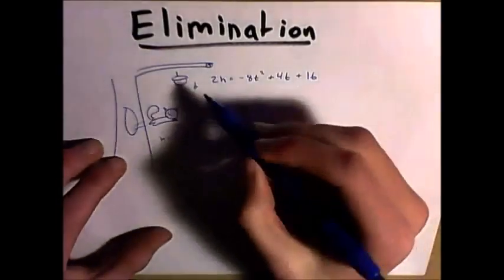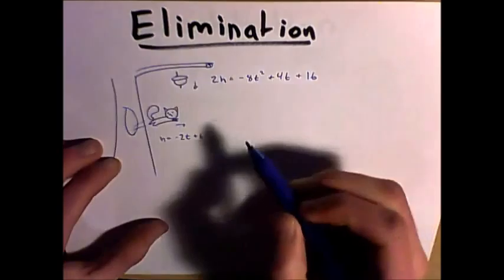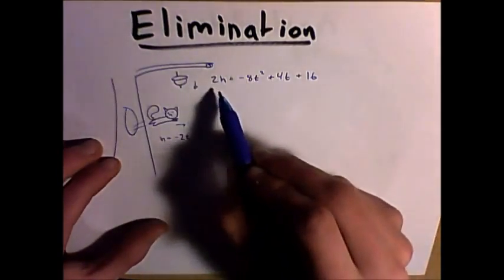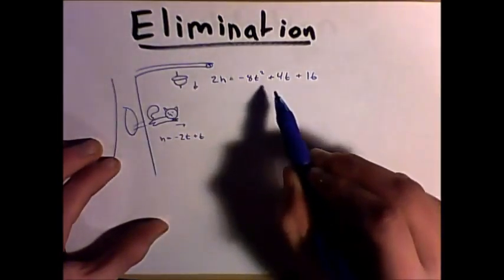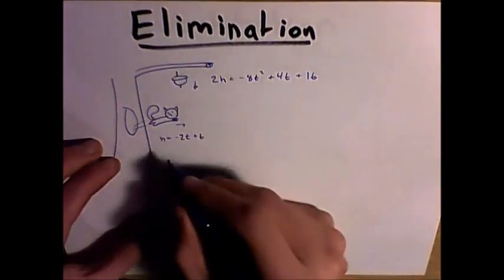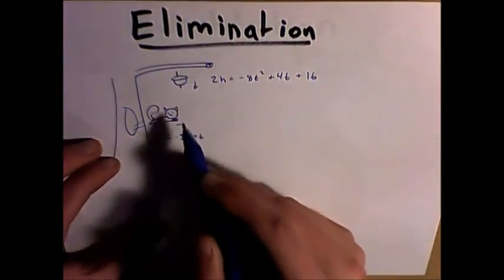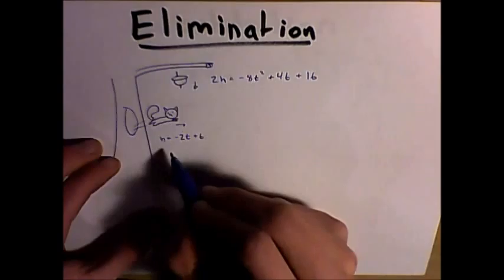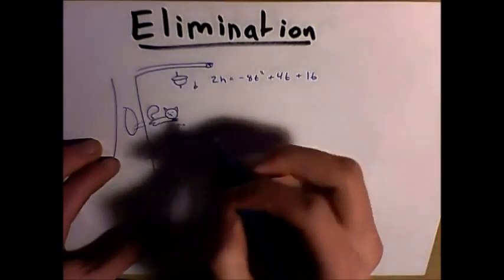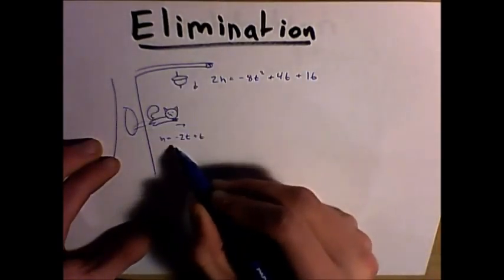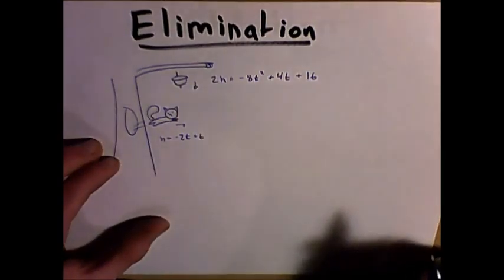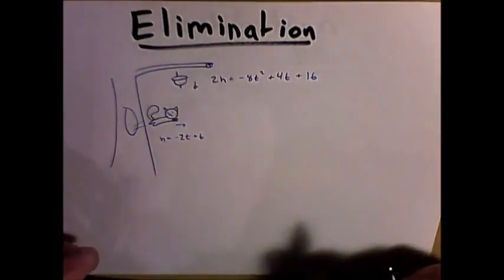Let's say we're given the problem where an acorn is falling from a tree, and it's modeled by 2h equals negative 8t squared plus 4t plus 16. A crazy squirrel decides that, wow, that acorn looks pretty good, and he decides to jump out of the tree and try and catch it. But his height is modeled by negative 2t plus 6. So how do we solve for this?